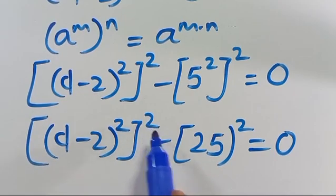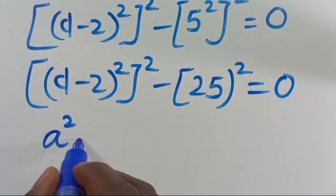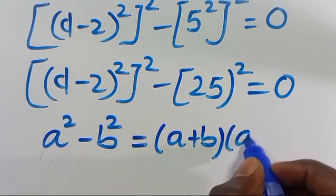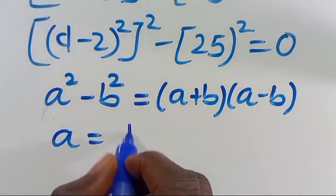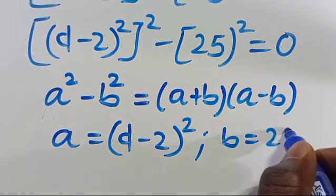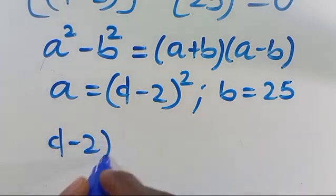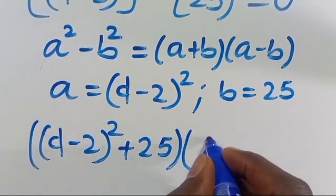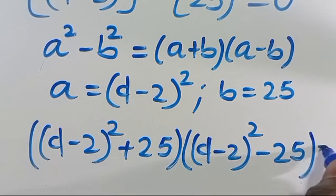Now this one has power 2 and this one also has power 2 — it's a difference of two squares. Recall that A to the power of 2 minus B to the power of 2 equals A plus B multiplied by A minus B. Comparing with this, our A equals D minus 2 in parenthesis to the power of 2, and our B equals 25. Applying this algebraic expression, we get D minus 2 in parenthesis to the power of 2 plus 25, multiplied by D minus 2 in parenthesis to the power of 2 minus 25, equals 0.